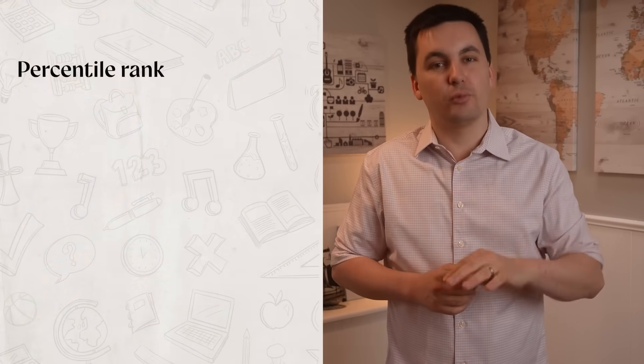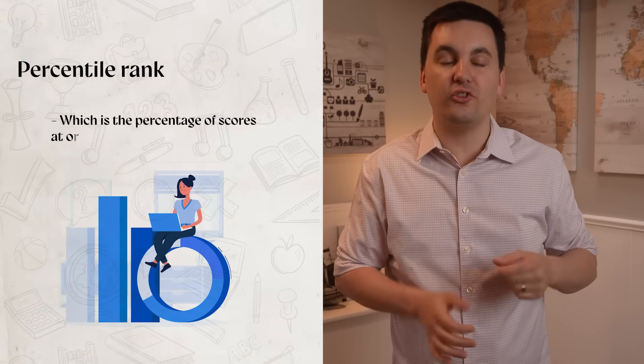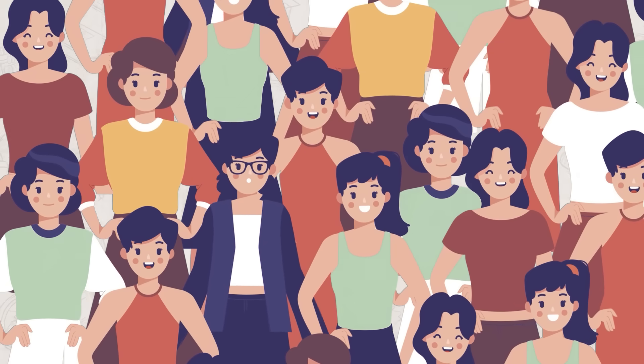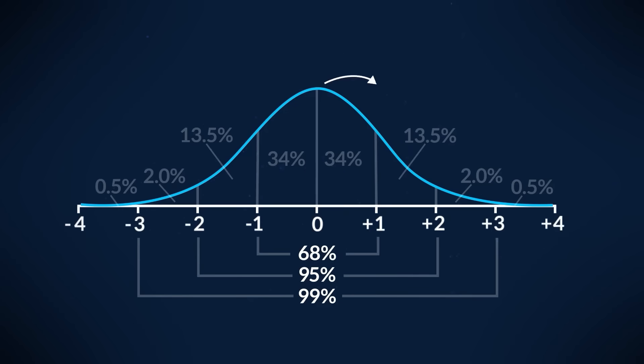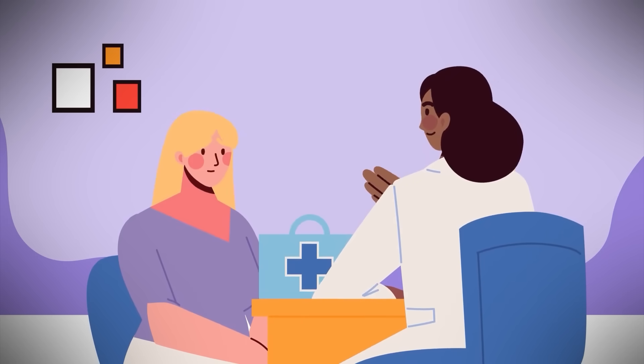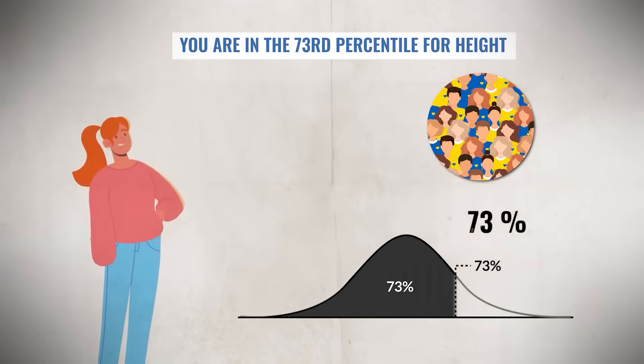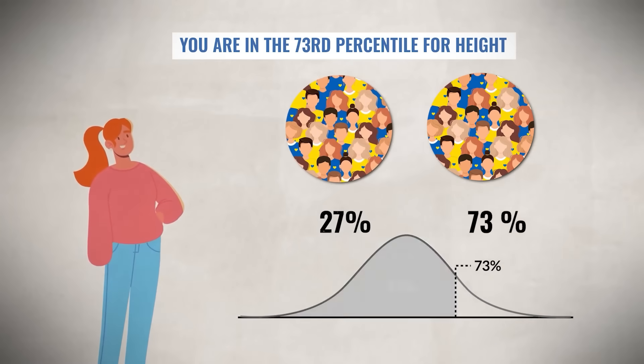And this connects into our next statistic, which is percentile rank, which is the percentage of scores at or below a particular score. Essentially, this is what tells you what percentage of the population has a score or value that's the same or lower than yours, which can be calculated in a normal distribution. When interpreting percentile ranks, remember that the median is the 50th percentile, meaning half the data is above and half the data is below. For instance, say you went to the doctor and find out that you are in the 73rd percentile for height. This means that 73% of people your age are shorter than or equal in height to you, while 27% of people your age are as tall or taller than you.